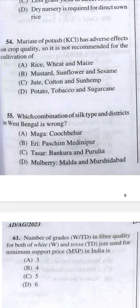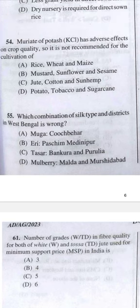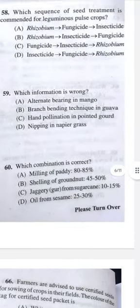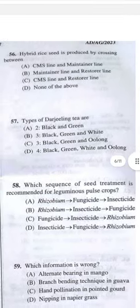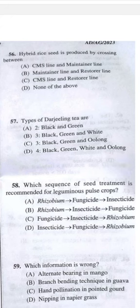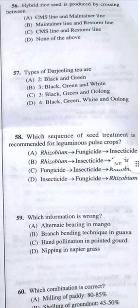Question 56: Hybridized seed is produced by crossing between the CMS line and restorer line — answer option C. Question 57: Types of Darjeeling tea — I answer with my own view: C, three types — black, green, and oolong.